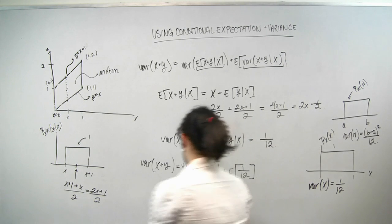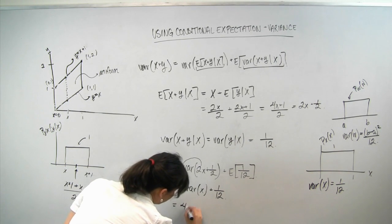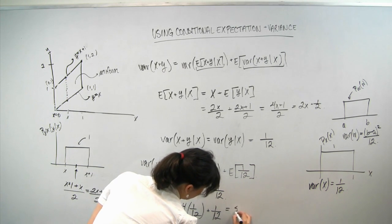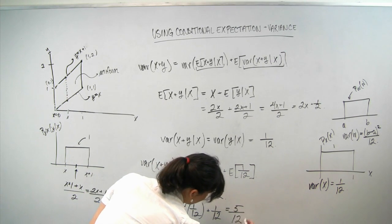So coming back over here, we get 4 times 1 12 plus 1 12, which is 5 12. And that is our answer.